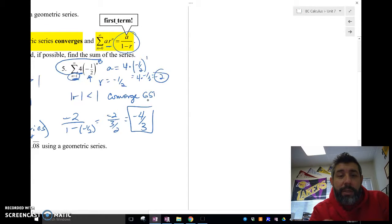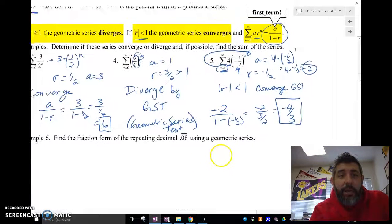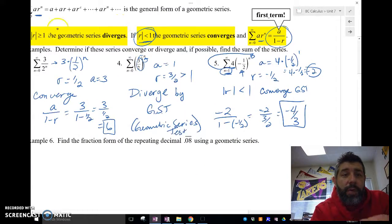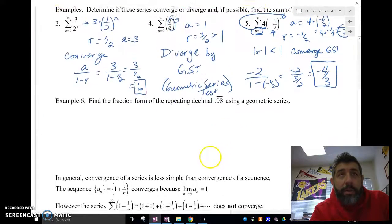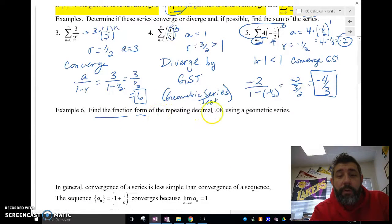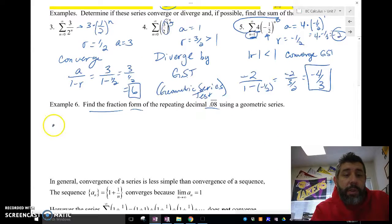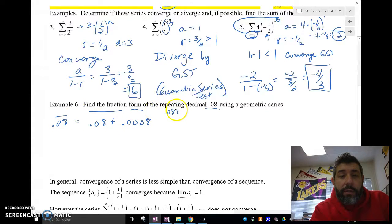So we can see if a geometric series converges by using the geometric series test, looking at the R value, whether the absolute value of R is less than 1 or greater than or equal to 1. Find the fraction form of a repeating decimal 0.08 using a geometric series. So here's what we're going to do. 0.08 is a repeating decimal that goes 0.08 plus 0.0008, right? Because this looks like this, 0.08080808 and so forth.